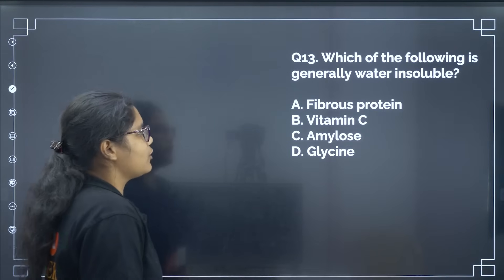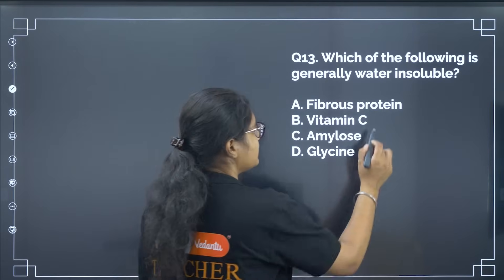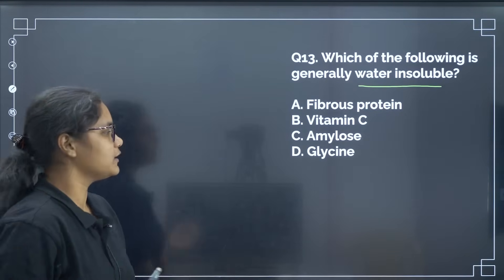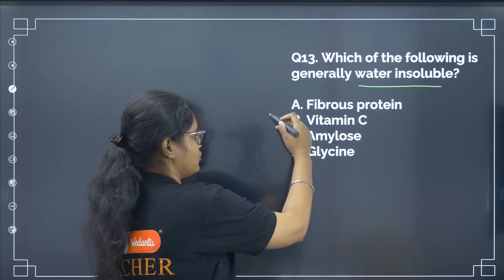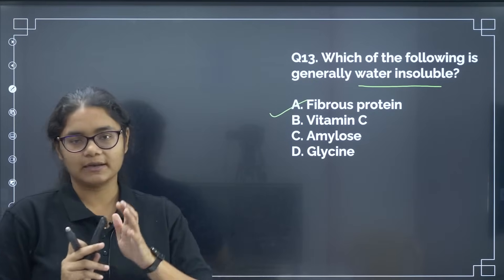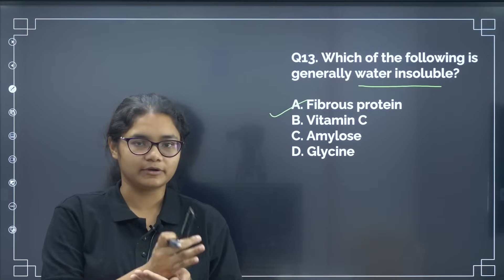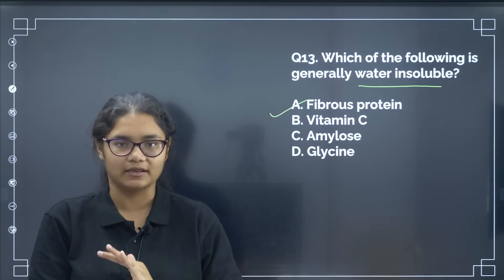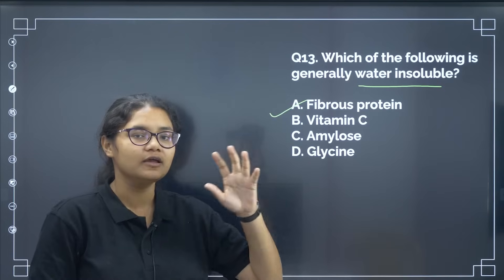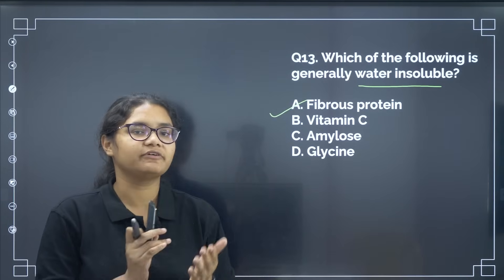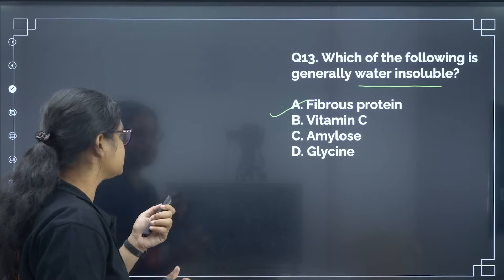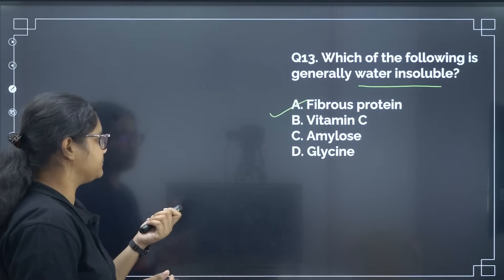Which of the following is generally water insoluble? Water-insoluble proteins are fibrous proteins. There is a key difference between globular and fibrous proteins: globular proteins are soluble but fibrous proteins are insoluble. The correct answer is option number A.